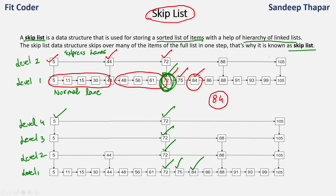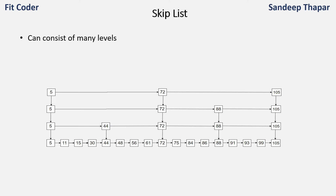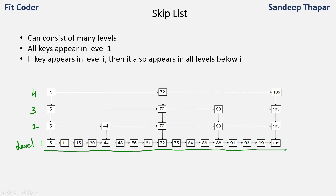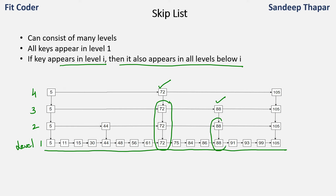Now let's look at the important properties of skip list. A skip list can contain many levels — level 1, level 2, level 3, level 4, and so on. All keys appear in level 1, which contains all nodes. Level 2 has fewer nodes than level 1, level 3 fewer than level 2, and so on. And if a key appears in level i, it also appears in all levels below i. For example, if 72 appears in level 4, it also appears in all lower levels. Similarly if 88 appears in level 3, it appears in all levels below 3.